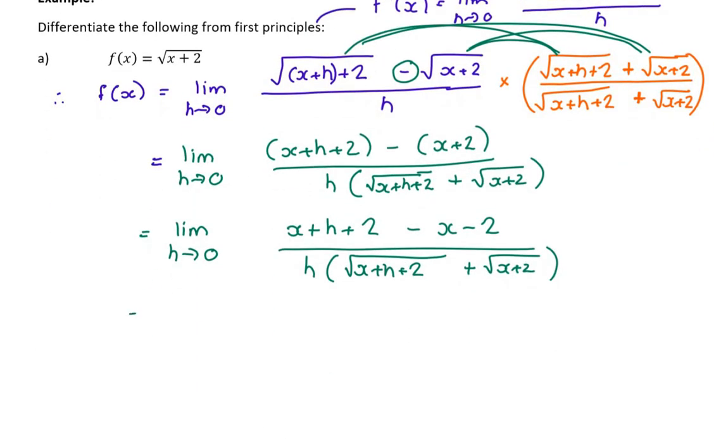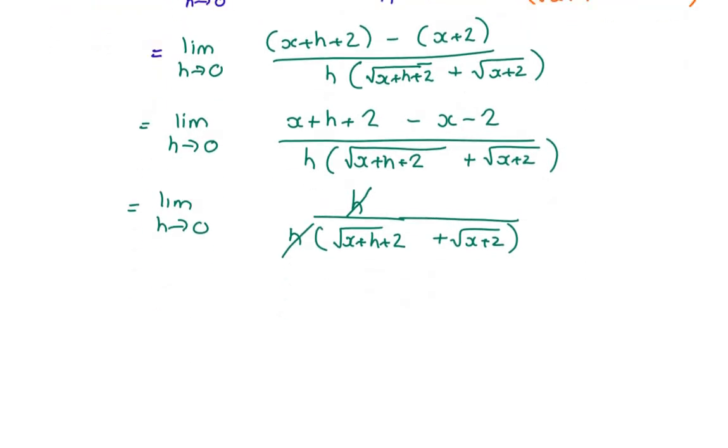What happens here is I've got this multiplied, and when you square something, the square root can drop. So you end up getting x plus h plus 2. But then you multiply those two together and they end up canceling each other out.